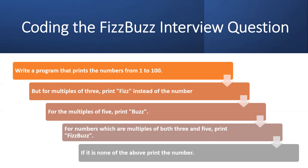The first point states: print numbers from 1 to 100, meaning we need to write a loop. The second point: for multiples of 3, print 'Fizz' instead of the number. So while looping from 1 to 100, divide the number by 3 — if the remainder is 0, it's divisible by 3, so print 'Fizz' instead of the number.